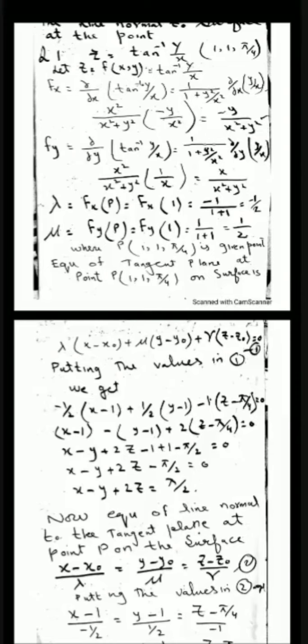Now we have to remember two equations. First, the equation of the tangent plane: λ(x - x₀) + μ(y - y₀) + μ(z - z₀) = 0. Lambda is the first partial derivative with respect to x evaluated at the given point. Mu is the first partial derivative with respect to y evaluated at the point. The value of μ (for z) will be minus one, because the surface is z = f(x, y), so it always consists of x and y variables.